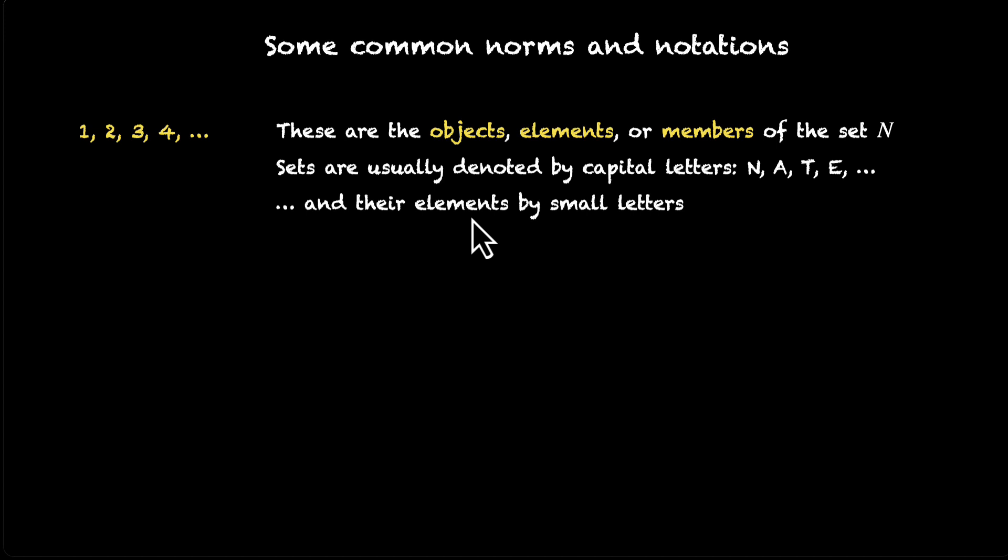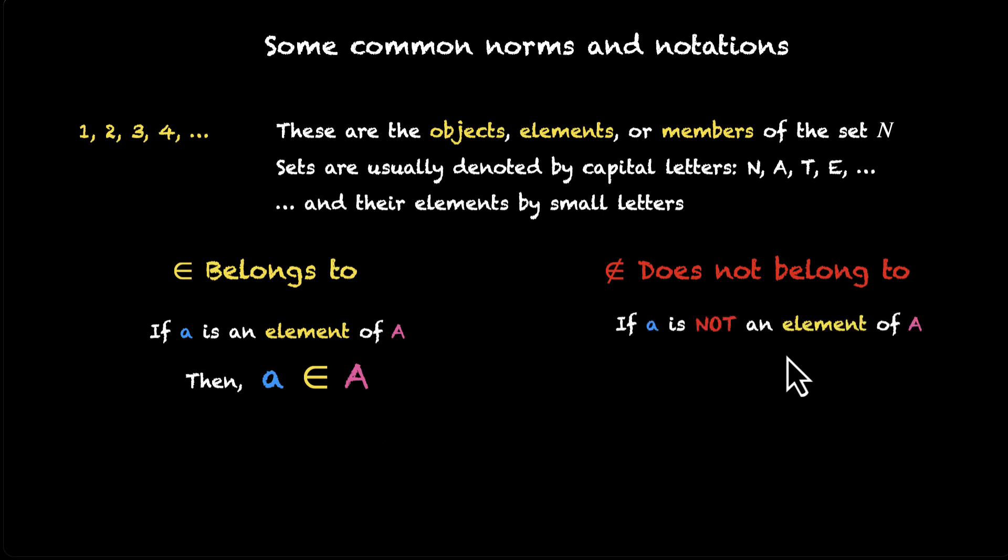And now let me introduce you to two symbols. This one, it's called Epsilon. This one means belongs to. So, when something belongs to a set, we use this symbol. And when something does not belong to a set, we use this symbol. It's also Epsilon but it has a cross over it. If small a is an element of capital A, we say that small a belongs to capital A. And when small a is not an element, we say that it does not belong to capital A. Examples: 5 belongs to the set of integers whereas 5.5 does not. A belongs to the set of vowels whereas B does not.